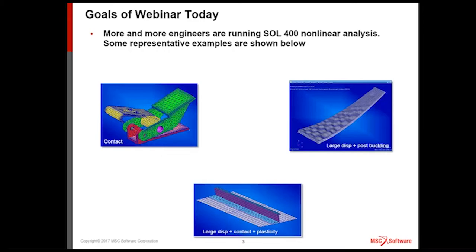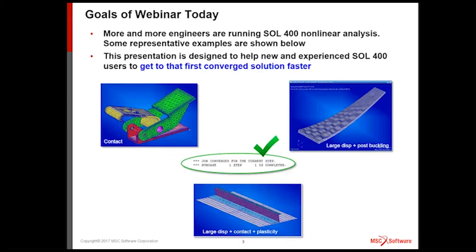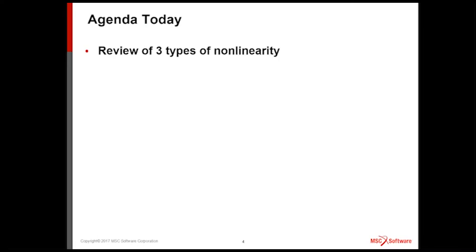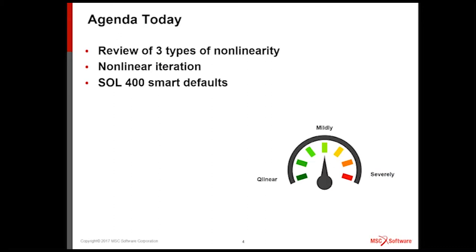So it takes longer to solve than a simple linear analysis job. Our goal today is to show you how to help you get to that first convergent solution faster. We'll show you nonlinear defaults and some techniques that will get you there faster. Today we'll briefly review the three types of nonlinearity in the context of nonlinear solutions, how to tackle these nonlinearities, discuss important concepts in nonlinear iteration, show you the smart defaults in Solution 400 along with the dedicated Patran user interface, and show you a few more useful diagnostics.